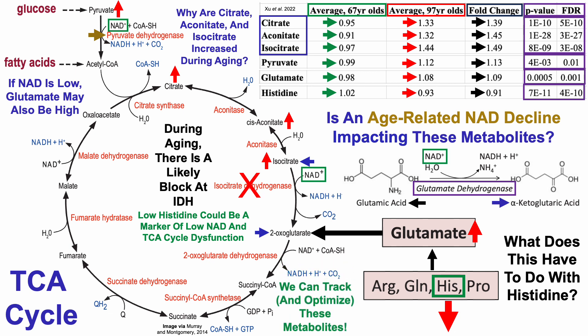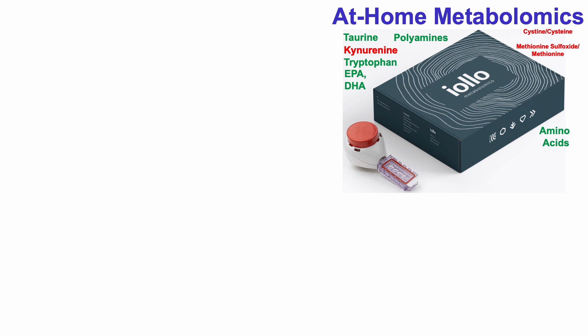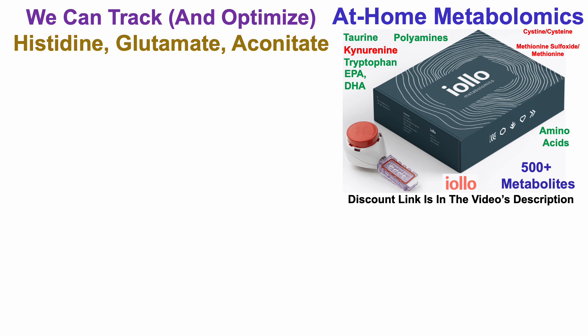We don't have to sit idly by — we can track and potentially optimize levels of these metabolites during aging using Iolo's at-home metabolomics kit. If you're familiar with the channel, you've seen me use this kit for many metabolites already. This kit is a goldmine of information — it includes more than 500 metabolites. I still have two more videos planned covering acyl carnitines as a marker of mitochondrial function and kidney function biomarkers. We can track and optimize at least three of the metabolites shown — histidine, glutamate, and aconitate — with Iolo's kit.